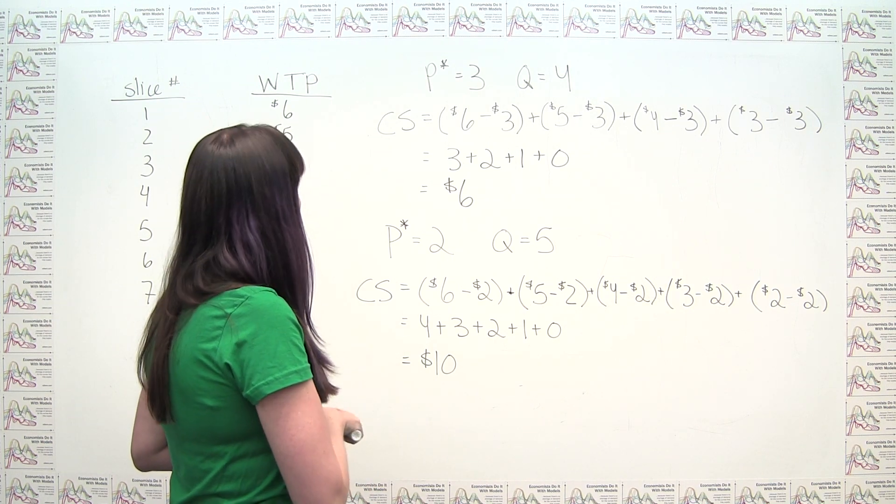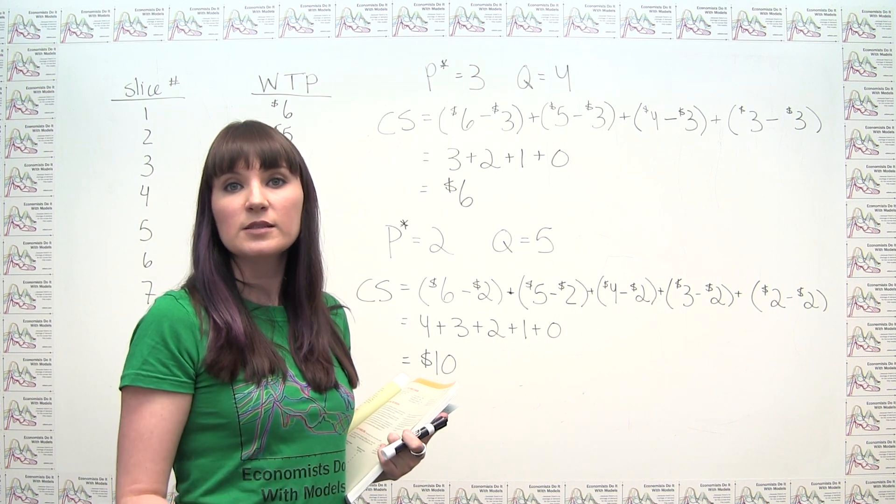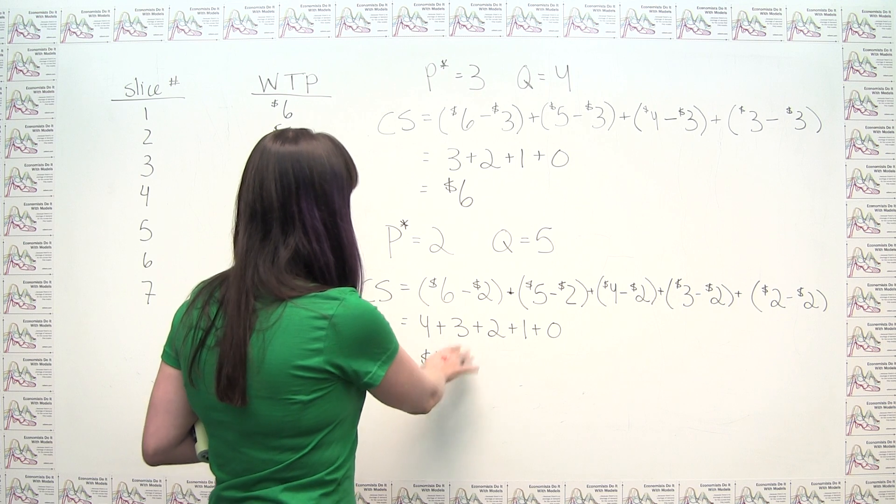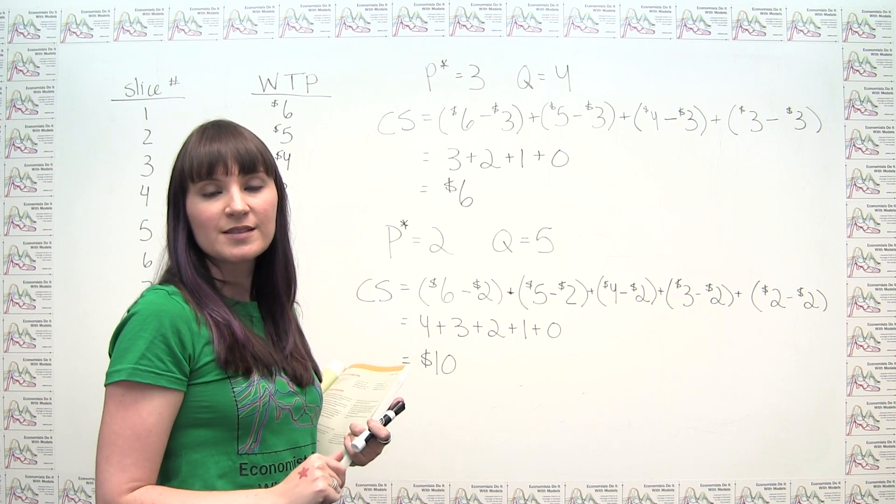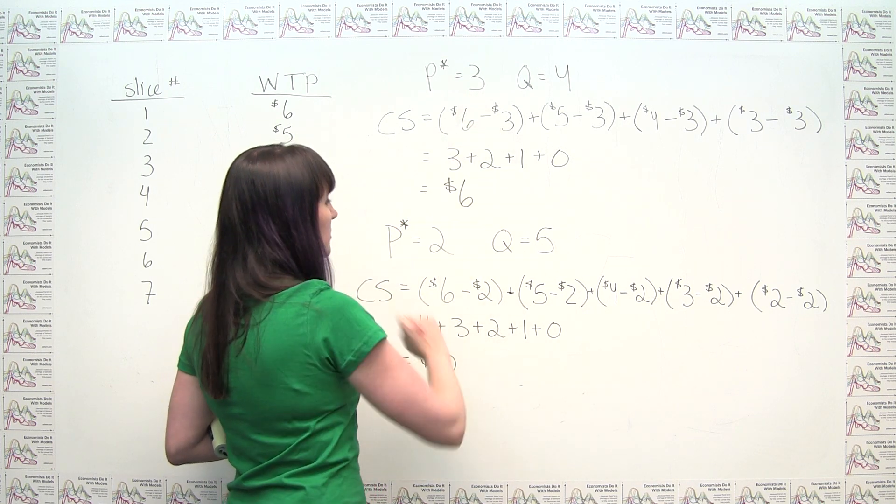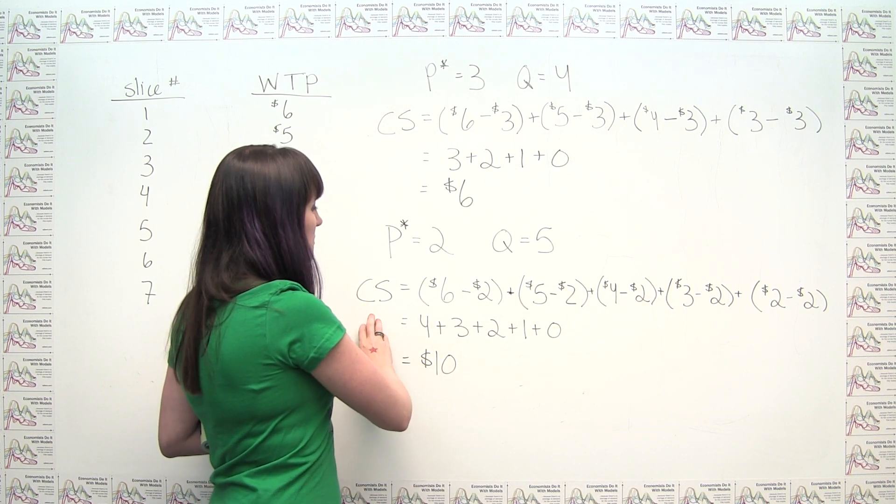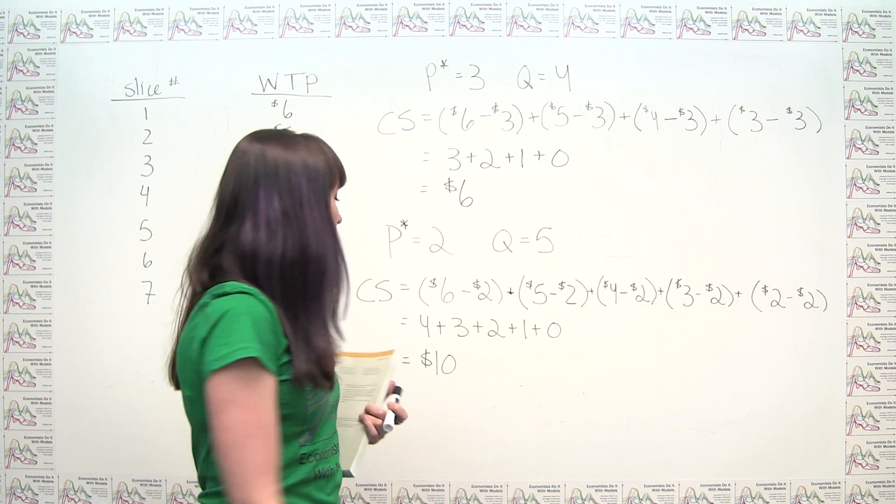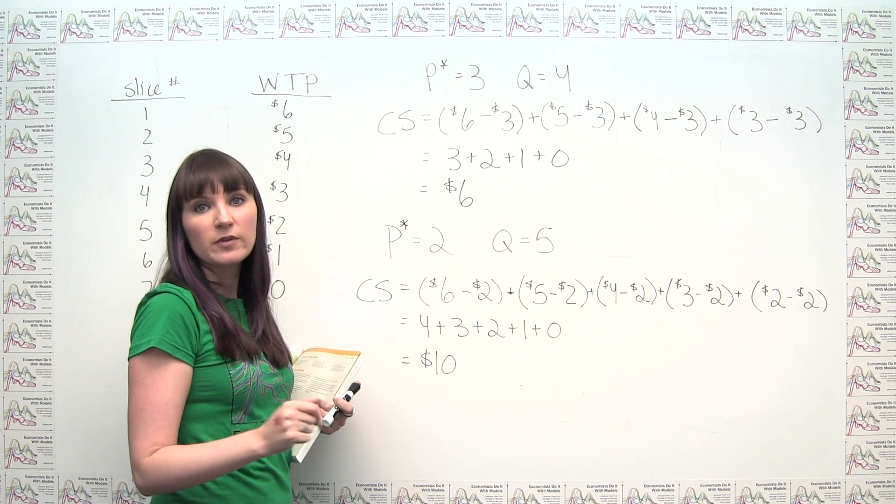And this illustrates the fact that, in general, consumer surplus increases when prices decrease. And that happens for two reasons. And we already alluded to one of them. It happens because consumers get additional surplus or a larger level of surplus on units that they were already consuming at the higher price. You know, we can compare here. Six minus two is bigger than six minus three. Five minus two is bigger than five minus three. And so on and so forth. But they're also getting additional consumer surplus because we're adding up surplus over a larger quantity. So you can think about those two levers driving this observation that prices and consumer surplus actually move in opposite directions.